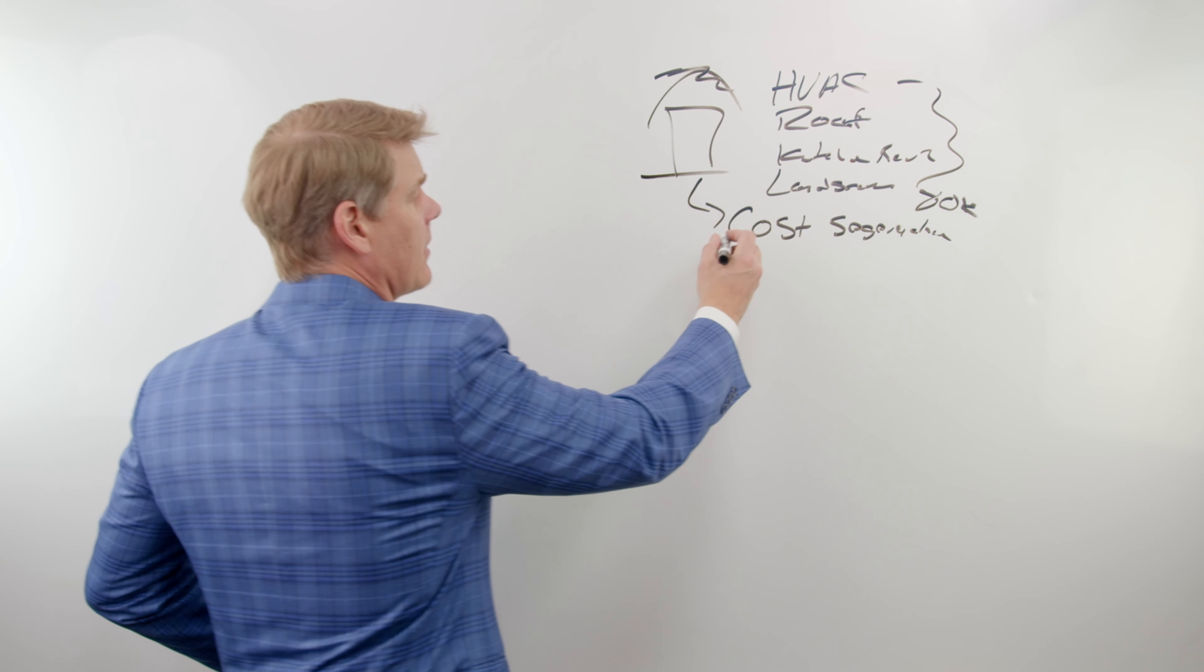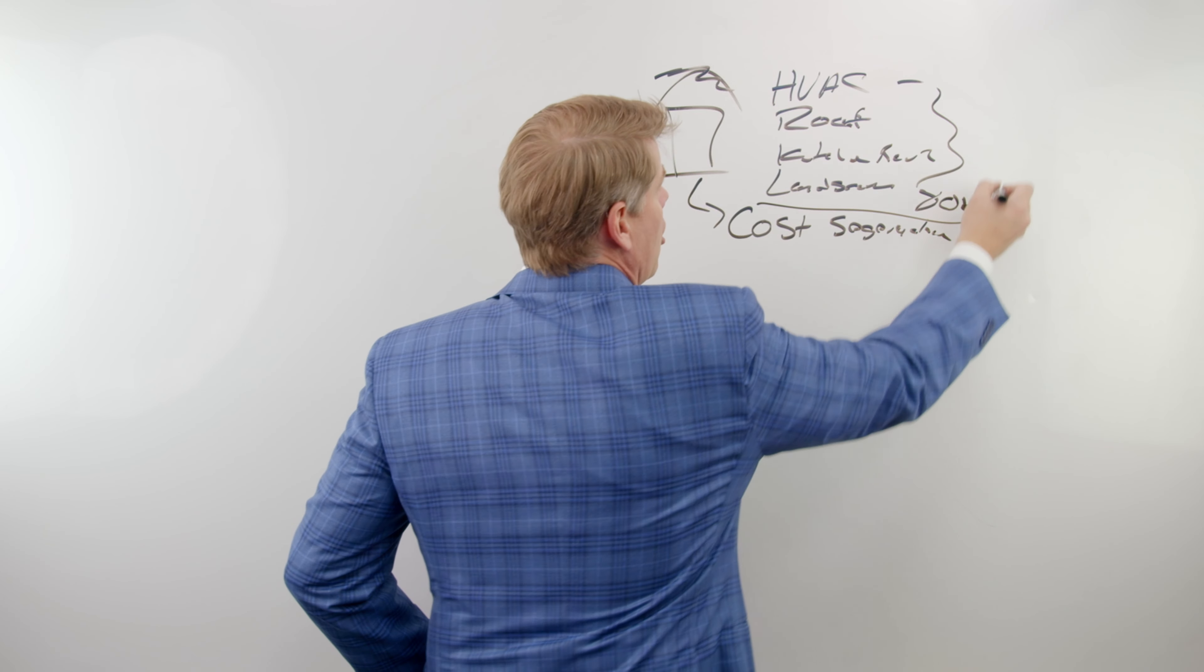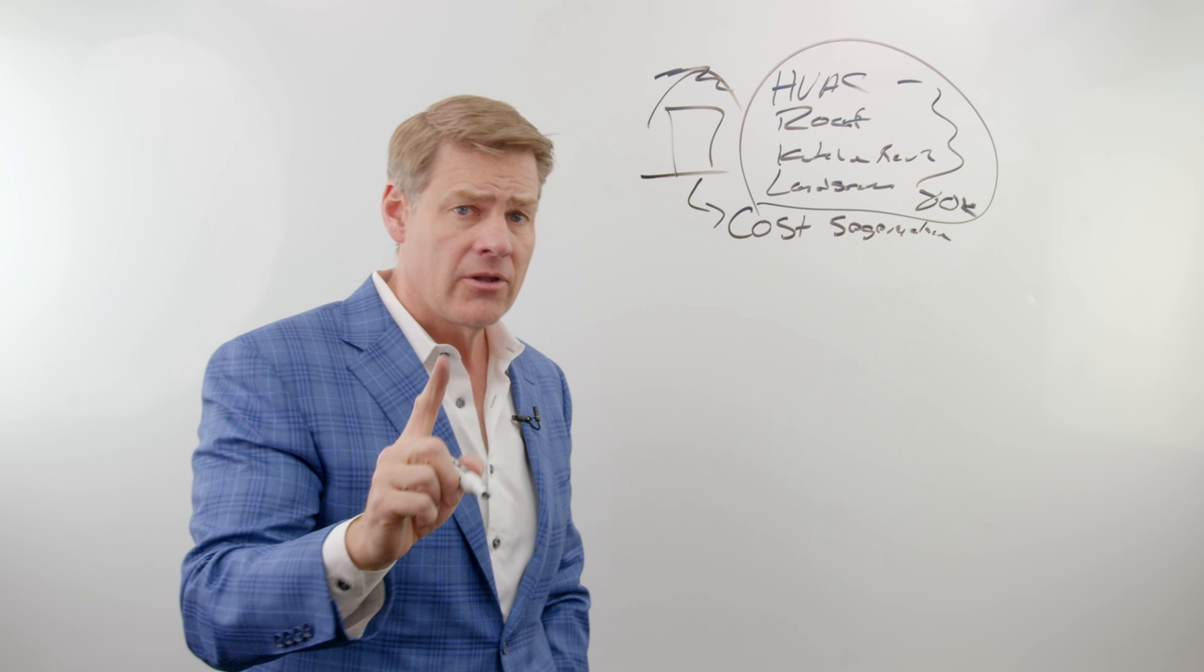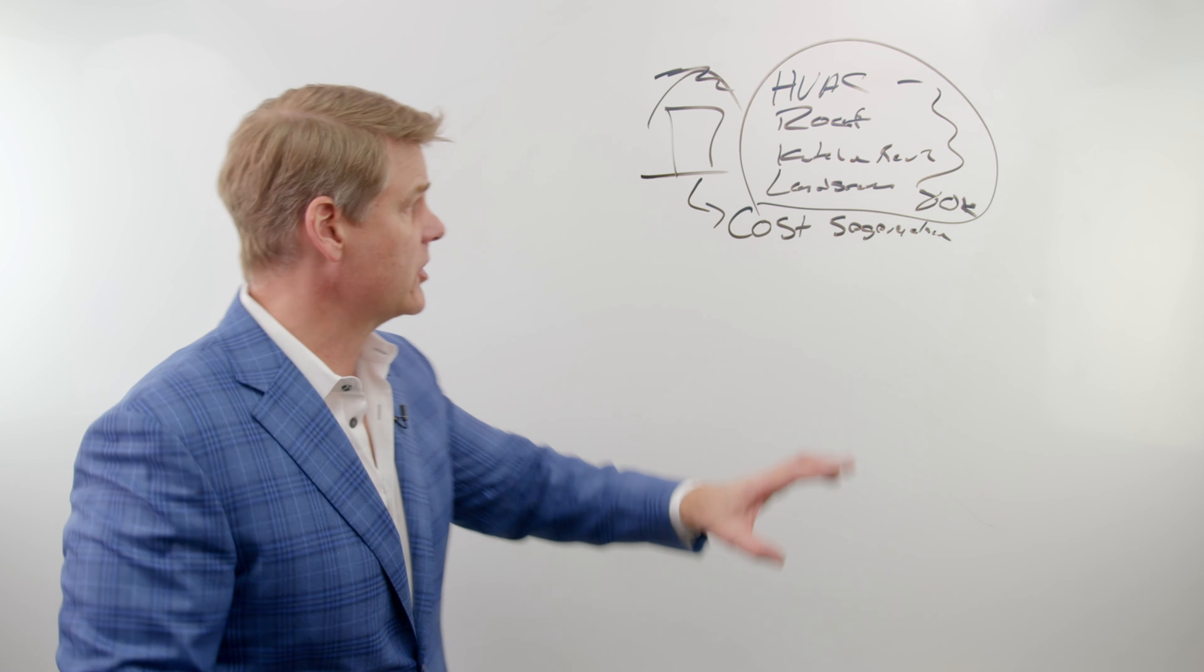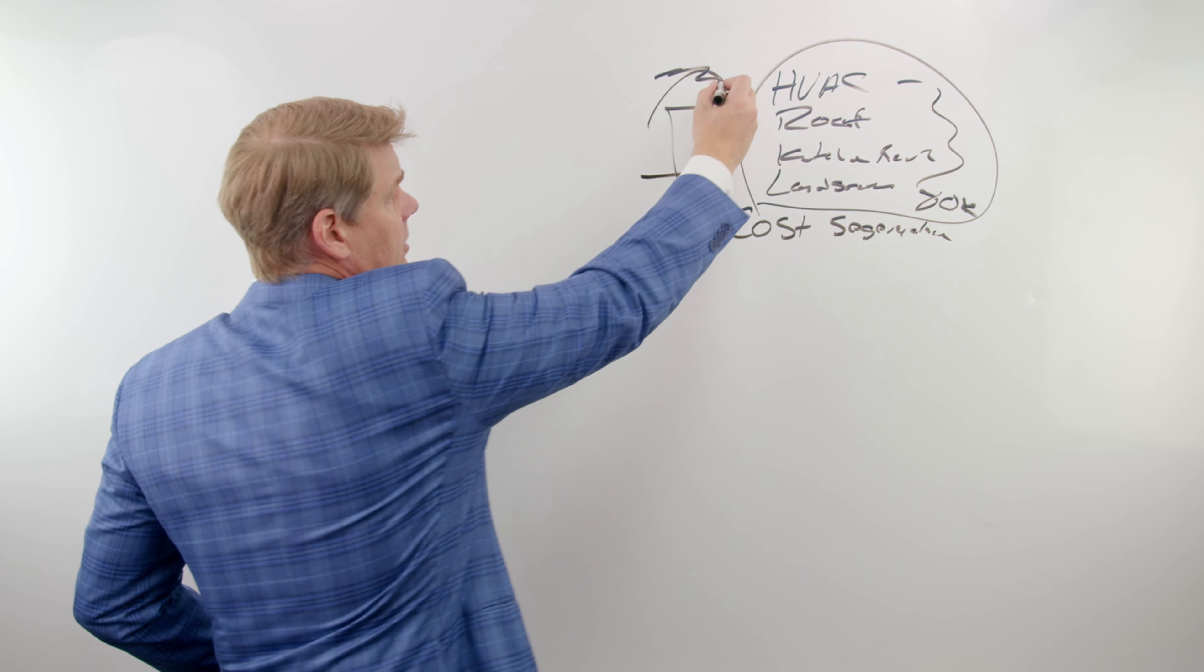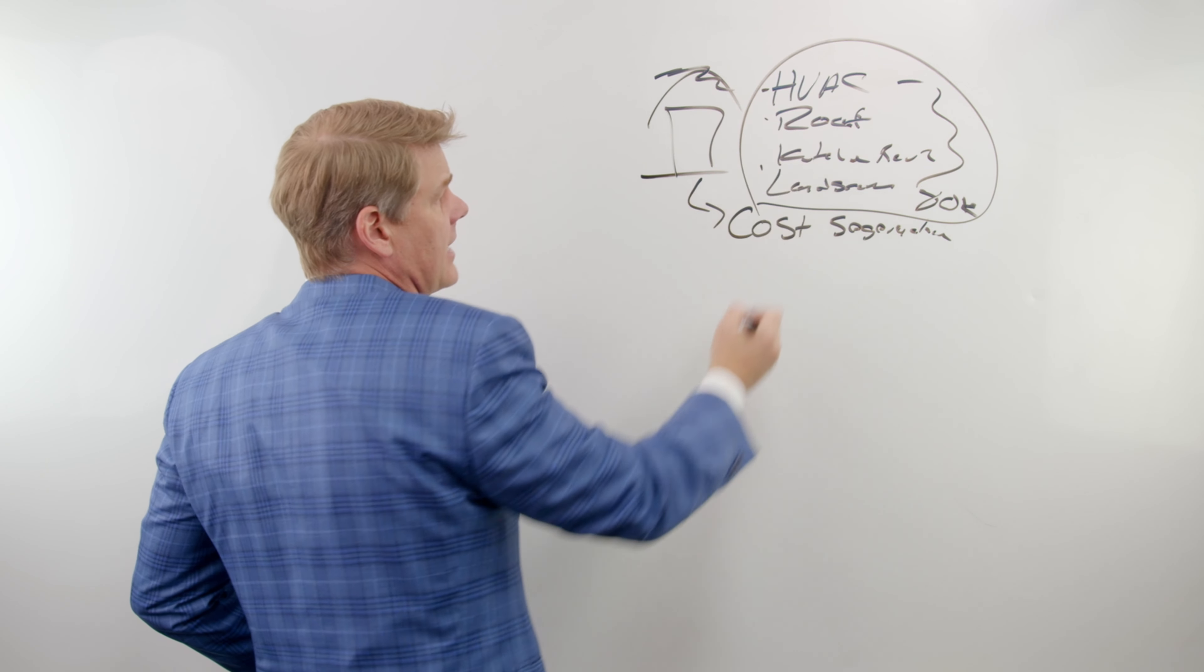You see, the cost segregation comes in after all of this value has been added in. The reality is what you should be doing is doing the cost segregation before you do this. Now here's why. So let's say that we're going to do is we're replacing all these items.